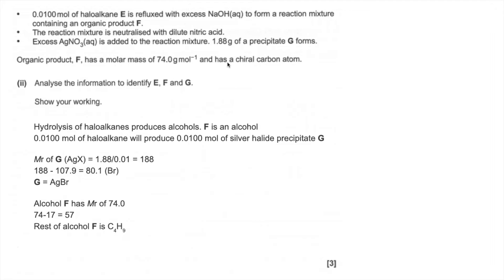Well, we've got to bring in this information here about F having a chiral carbon. So the chiral carbon means that there's an atom, a carbon atom, in that molecule, in that alcohol F, with four different groups attached. So it's not butan-1-ol, it's butan-2-ol.